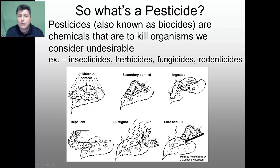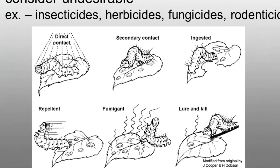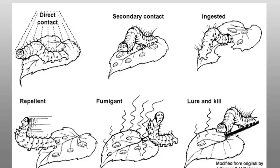The application of these pesticides is as varied as their chemical composition. Some pesticides are sprayed directly on the pests. Others are placed for secondary contact so that the organism can take that pesticide back to their homes and kill the entire colony. Sometimes it's ingested, which results in their death, or in some cases the pesticide is only acting as a repellent.